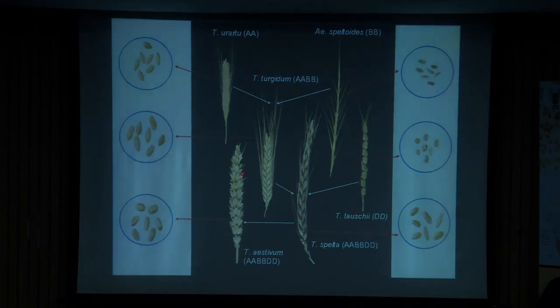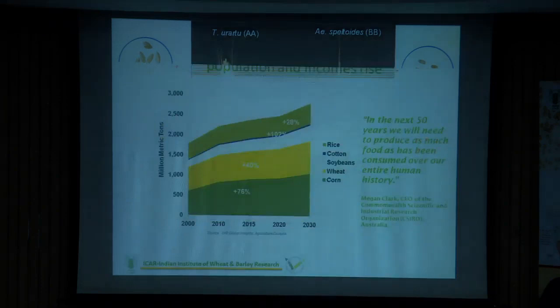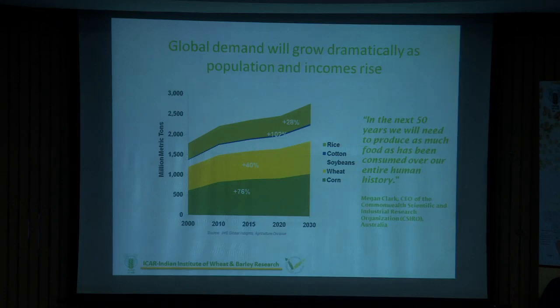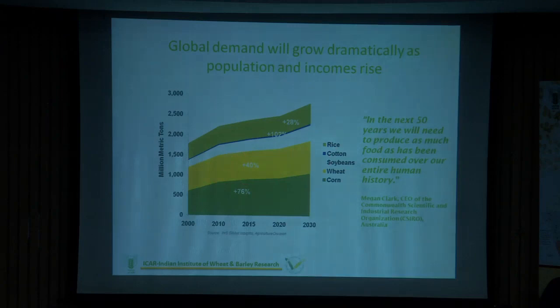This is very basic content you may already know. Let me explain why wheat is important. There is a prediction that in the next 50 years, we will need to produce more food as our population is growing at a very fast rate. Wheat becomes one of the major cereals, after rice and maize, where we need to produce more because wheat is consumed across the world in different countries in different forms.